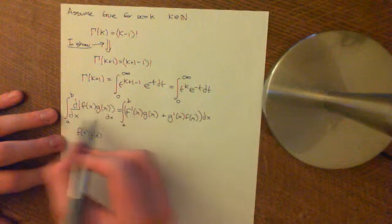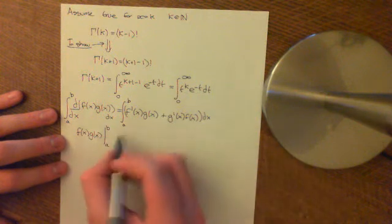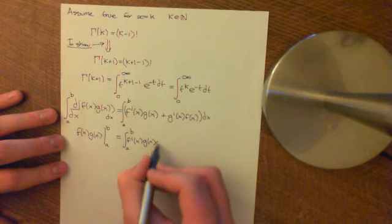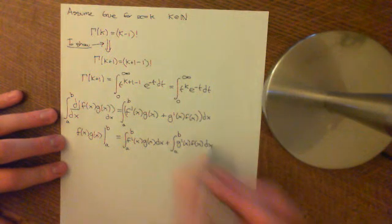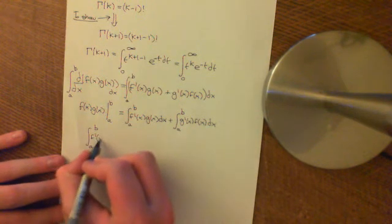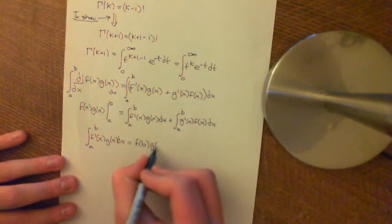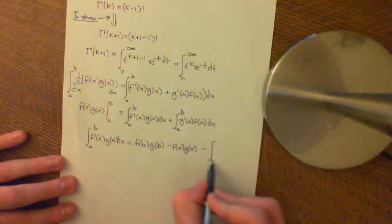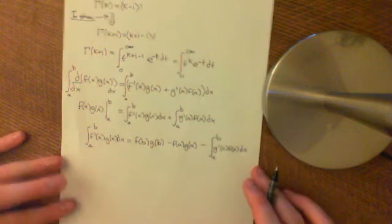So rearranging, the integral from a to b of f'(t)·g(t) dt equals f(b)·g(b) minus f(a)·g(a) minus the integral from a to b of g'(t)·f(t) dt. That is the integration by parts formula.